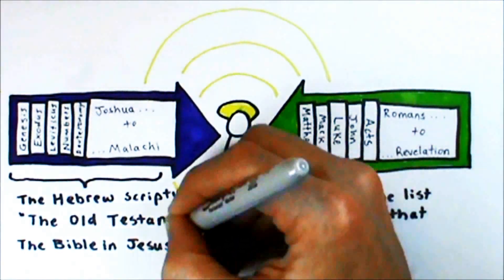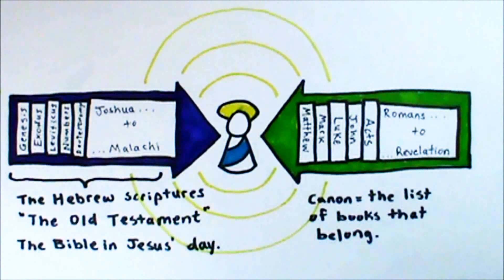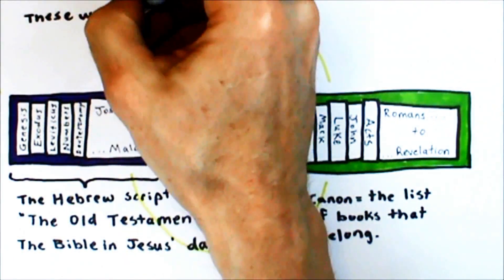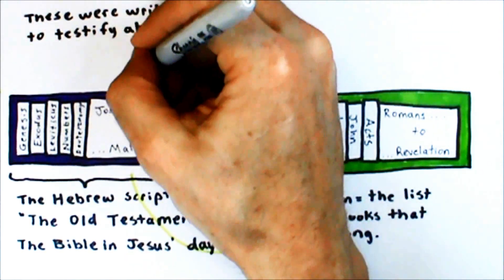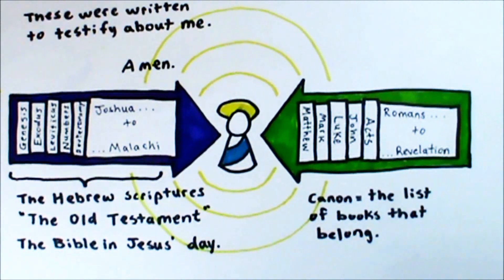This, then, is how we got the Christian Bible. It's a book that literally grew up around the person of Jesus Christ: the writings that promised him beforehand, the writings that interpreted his life story as it happened, and the writings that teach us how to follow him now. Or, as Jesus himself said it in one place, these were written to testify about me.